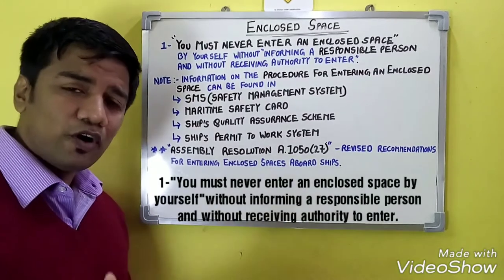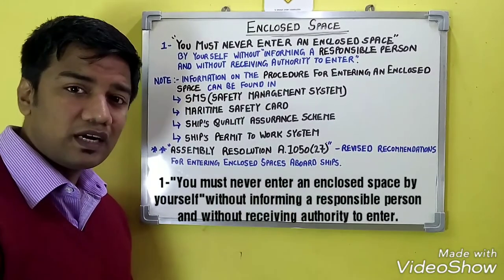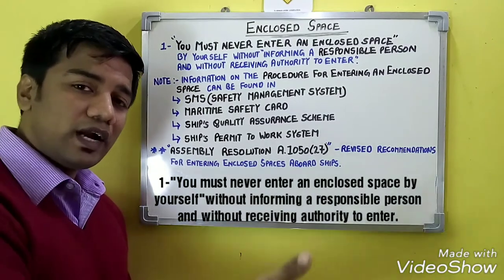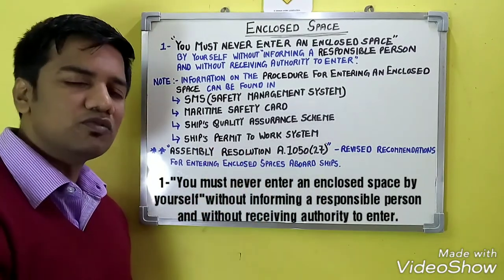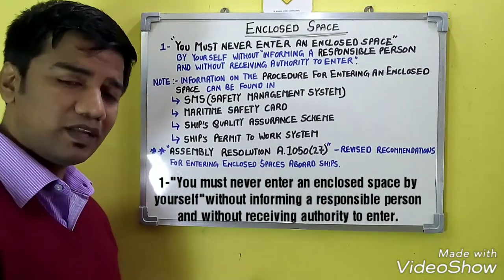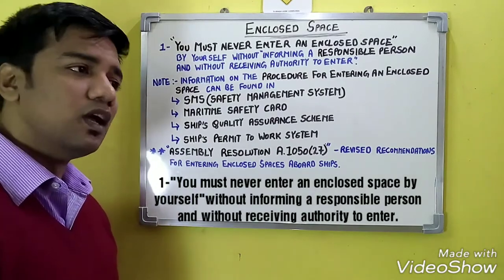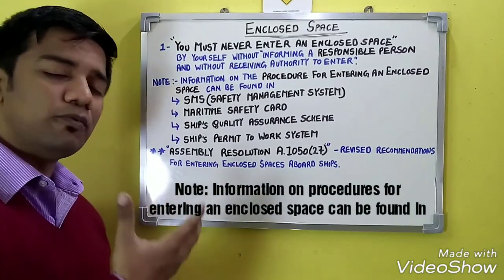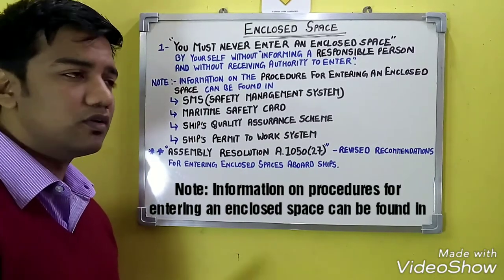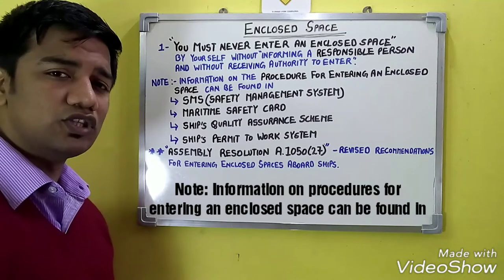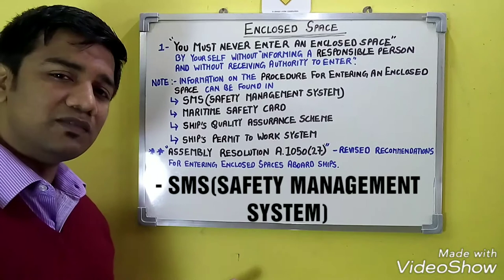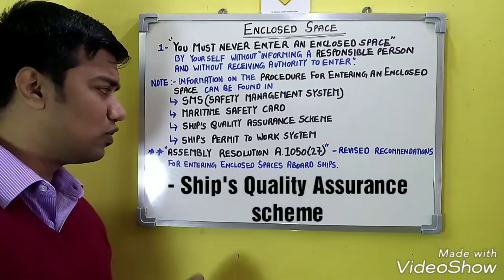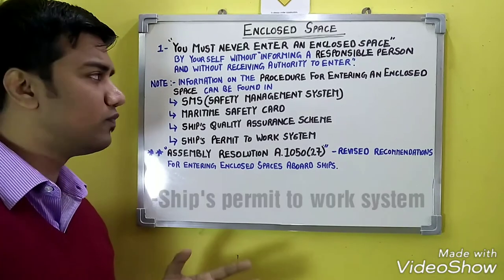The first and foremost point is that you must never enter an enclosed space without informing a responsible person and without receiving authority to enter. The responsible person is usually the master. Information on the procedures to be followed can be found on board in: Number 1, your safety management system. Number 2, maritime safety card. Number 3, ship's quality assurance scheme. Number 4, ship's permit to work system.